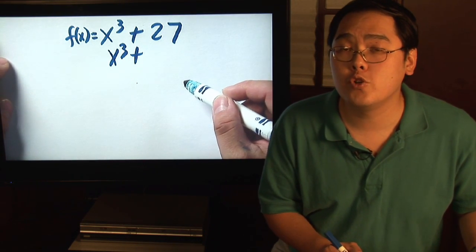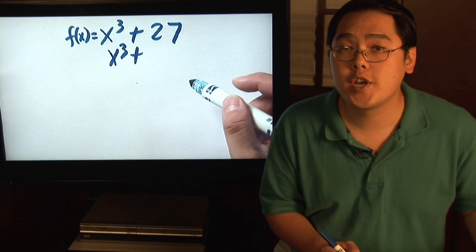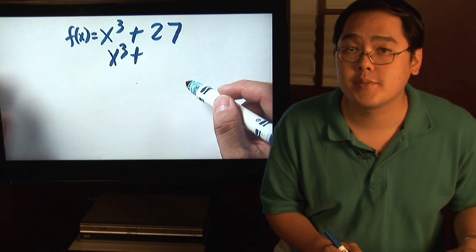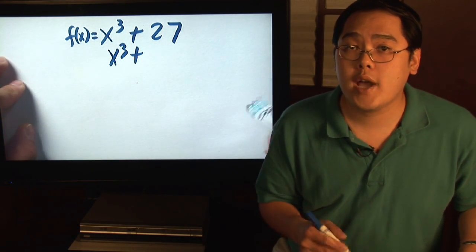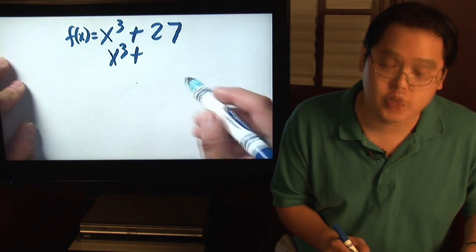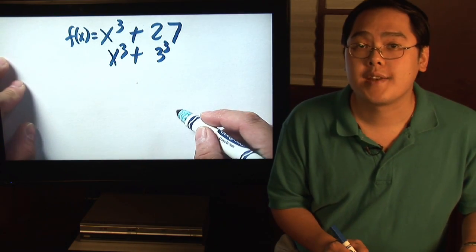For example, what number cubed is 27? In other words, what number multiplied by itself three times will give you 27? Well after a little bit of thought, you'll come to the conclusion that 27 is really 3 cubed.